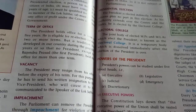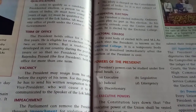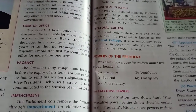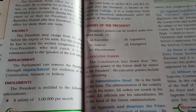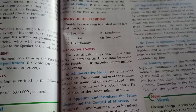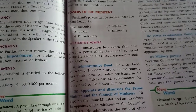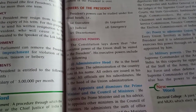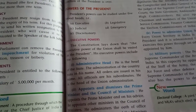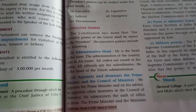The president's powers can be divided into five broad categories: executive, legislative, judicial, emergency, and discretionary. Under executive powers, the president is the administrative head and head of the state — the entire administration of the country runs in his name, all orders are issued in his name, and all officials are his subordinates. He is also the head of the union administration.